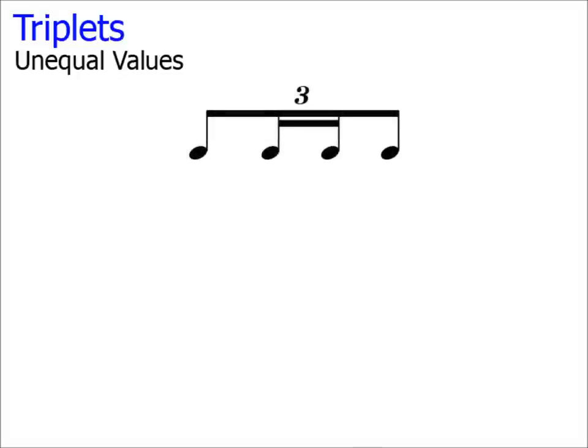OK, so what about triplets that do not have equal values, or contain less or more than 3 notes? Well, this is a little trickier, but once you get the hang of it, it does get easier. There are a few steps to this, so let's try an example. Here's a triplet: quaver, 2 semiquavers, and a quaver. So there are 4 notes in this triplet. So not only are the note values different, there are 4 notes in this triplet.